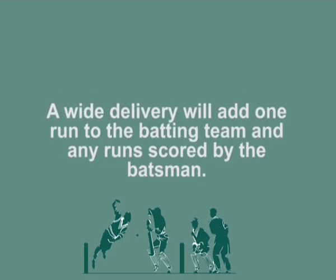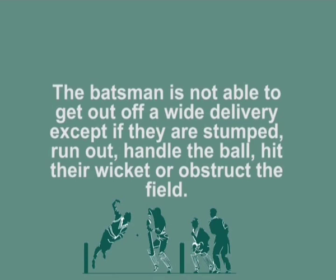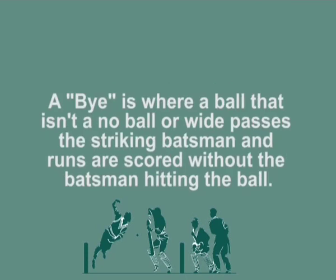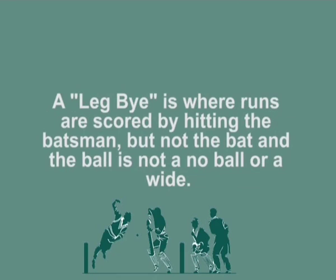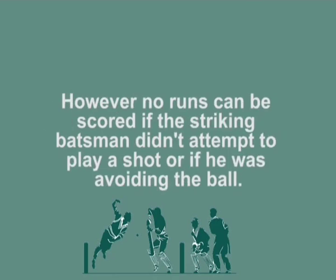A wide delivery will add one run to the batting team plus any runs scored by the batsman. The batsman is not able to get out off a wide delivery except if they are stumped, run out, handle the ball, hit their wicket, or obstruct the field. A bye is where a ball that is not a no ball or wide passes the striking batsman and runs are scored without the batsman hitting the ball. A leg bye is where runs are scored by the ball hitting the batsman but not the bat, and the ball is not a no ball or wide. However, no runs can be scored if the striking batsman did not attempt to play a shot or if he was avoiding the ball.